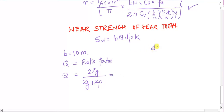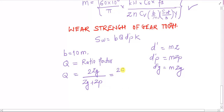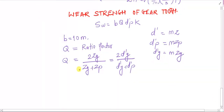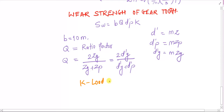Since pitch circle diameter equals m·z, we can express the ratio factor equivalently as q = 2d'g / (d'g + d'p). The next term k is known as the load stress factor. It depends on the properties of the individual materials used in the gear construction.